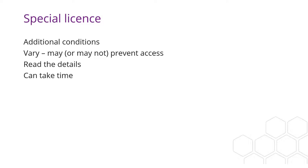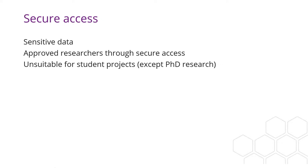For example, a common condition is that permission from the data owner is needed before you can access the data. Finally, controlled data are more disclosive than other types of data and can only be accessed within a secure environment by researchers who have completed training and applied to use the data. Controlled data are therefore unsuitable for student research projects.